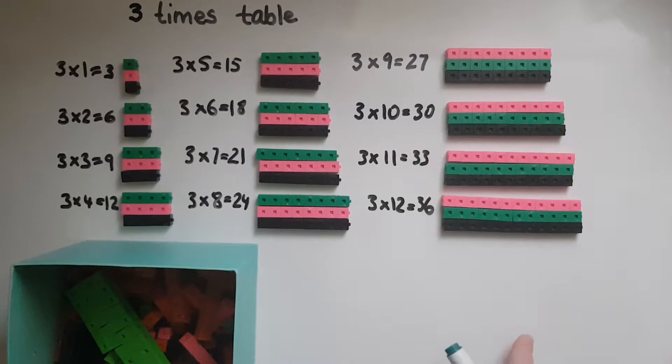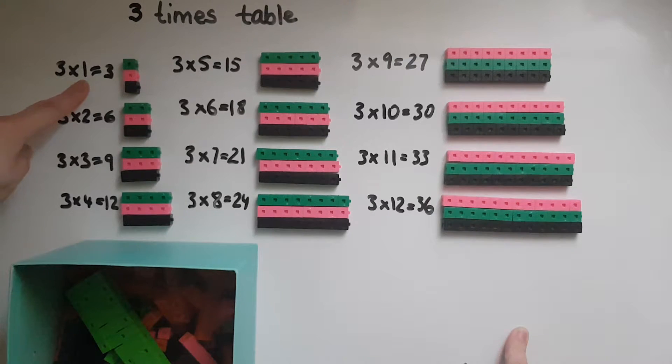So the three times table, as the name suggests, we're talking about three times. I would put my hand three times in the box and get one cube each time, so I'll end up with three cubes. One the first time, another one the second time, and another one the third time, so I have three cubes.